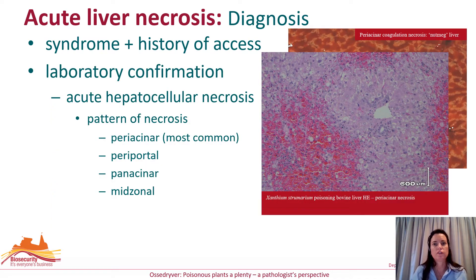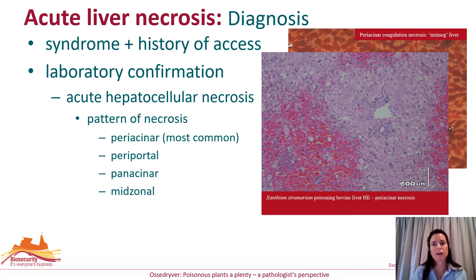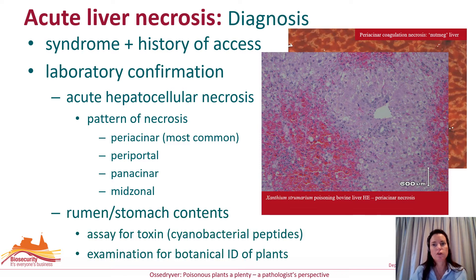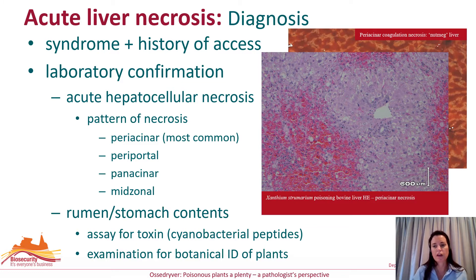Death due to acute liver necrosis can be confirmed by histological examination of the liver. Microscopically, the pattern of acute liver necrosis can vary widely between cases. The patterns of necrosis we see in descending order are periacinar, periportal, panacinar and mid-zonal. Although the pattern is not specific for any particular hepatotoxin, it may be useful in narrowing the list of differentials. Collection of rumen contents can be used for toxin assay or botanical identification of plant fragments. Because animals often die so acutely, the causative plant will generally still be present within the animal's rumen.